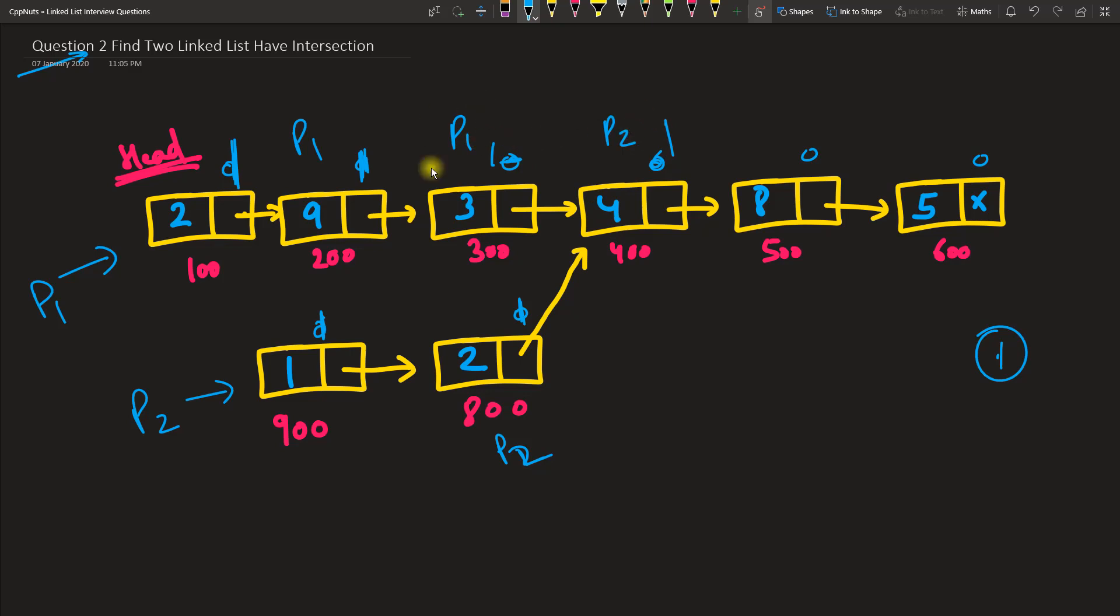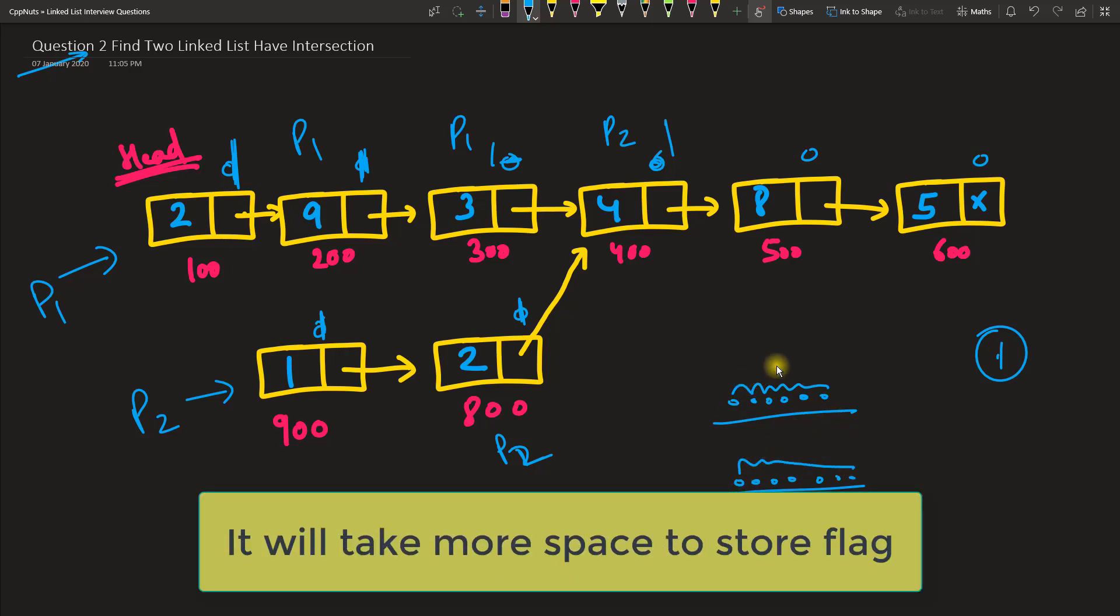And again we'll move, so p1 will try to come here but it will see that it is already one, so we will raise a flag that we have intersection. Because if there is no intersection, we will always have zero in different lists and we will never find one when we jump from one to another. This is not a good solution.